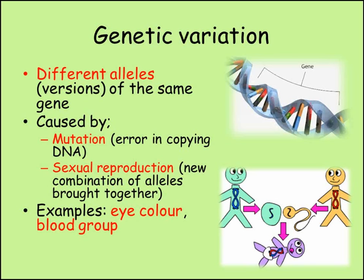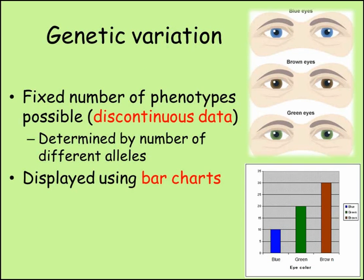If variation is genetic, then there are a fixed number of possible phenotypes an individual can display. Phenotype is the observable trait in an individual. Let's use eye colour as an example. If eye colour was determined by a single gene with three possible alleles — blue, green and brown — and we collected information about a large number of people, we would find that they only have three possible eye colours. It is not possible to be midway between blue and green; you are either one or the other. We call this type of data discontinuous, and we use bar charts to show it.